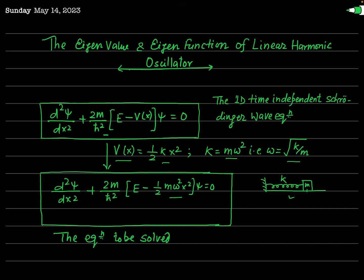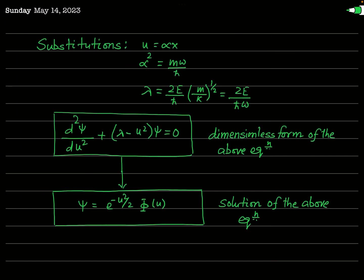The Schrödinger equation now becomes the form shown in the next box. Our aim is to solve this differential equation using the method of substitution. We introduce a new independent variable u related to x by u = αx, where α² = mω/ℏ. We also define a dimensionless constant λ = 2E/(ℏω).